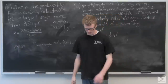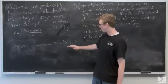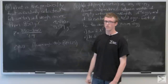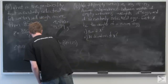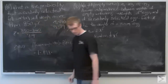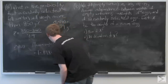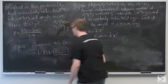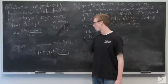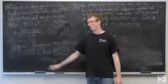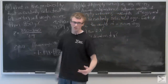We look up the z value in our table and find that it is 0.898. But we need to do 1 minus 0.898 because we're looking for the probability greater than 1.27. So the probability that z is less than 1.27 is 0.898, and we subtract that from 1 to find the probability that z is greater than 1.27. That completes part A.